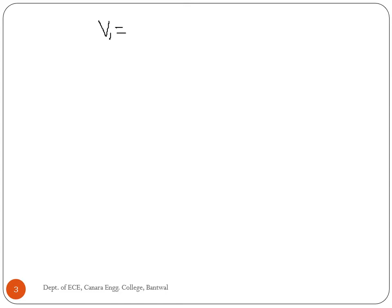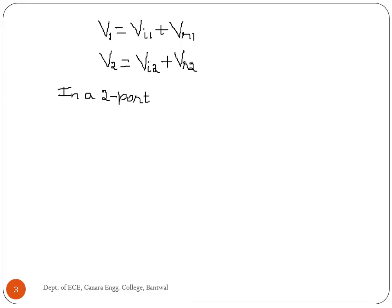The total voltage is the sum of incident and reflected voltage waves V_i and V_r respectively. The total voltage at port 1 is V1 = V_i1 + V_r1, and the total voltage at port 2 is equal to the incident voltage at port 2 plus the reflected voltage at port 2, in a two-port network. We can express the normalized waves as follows.